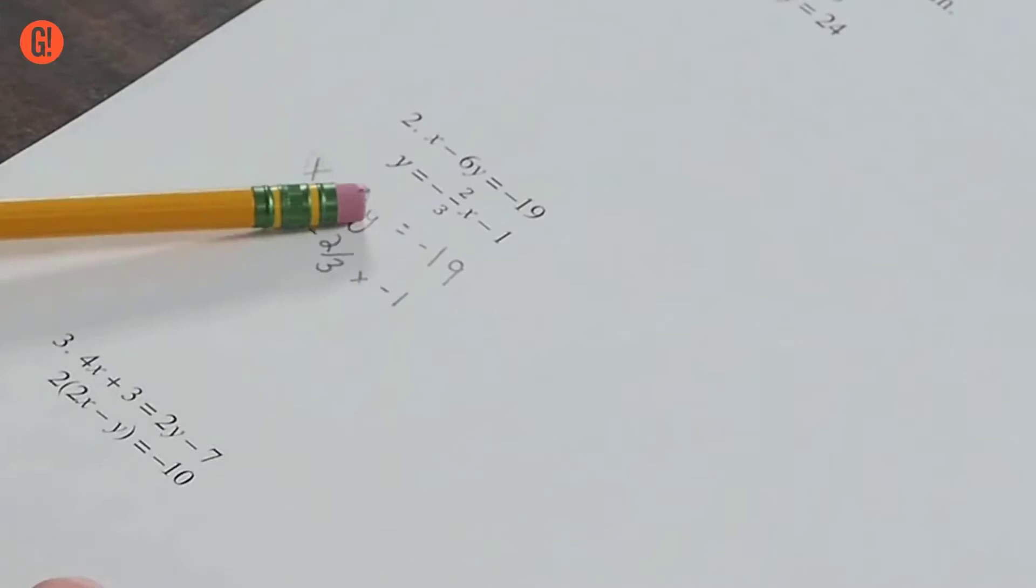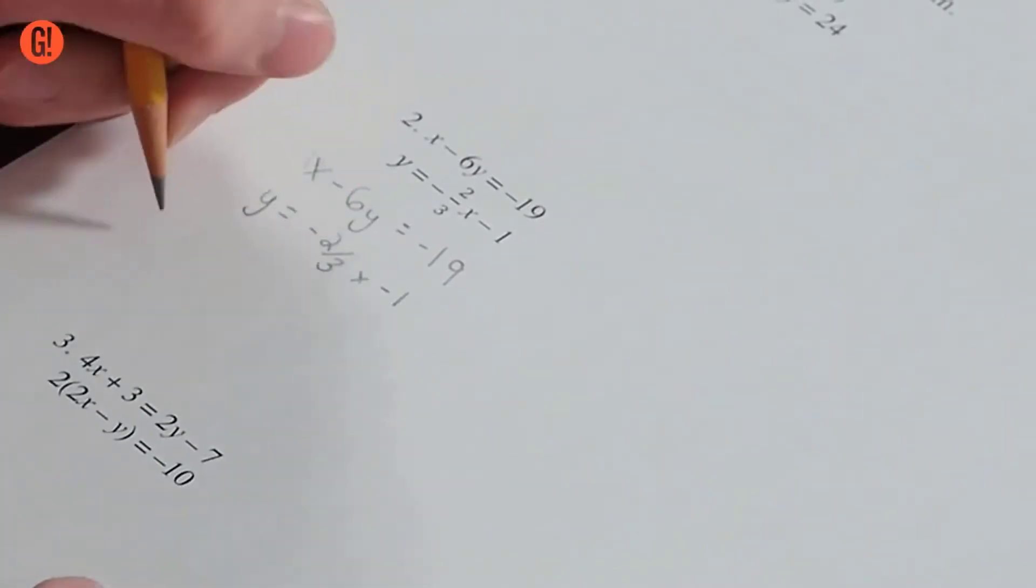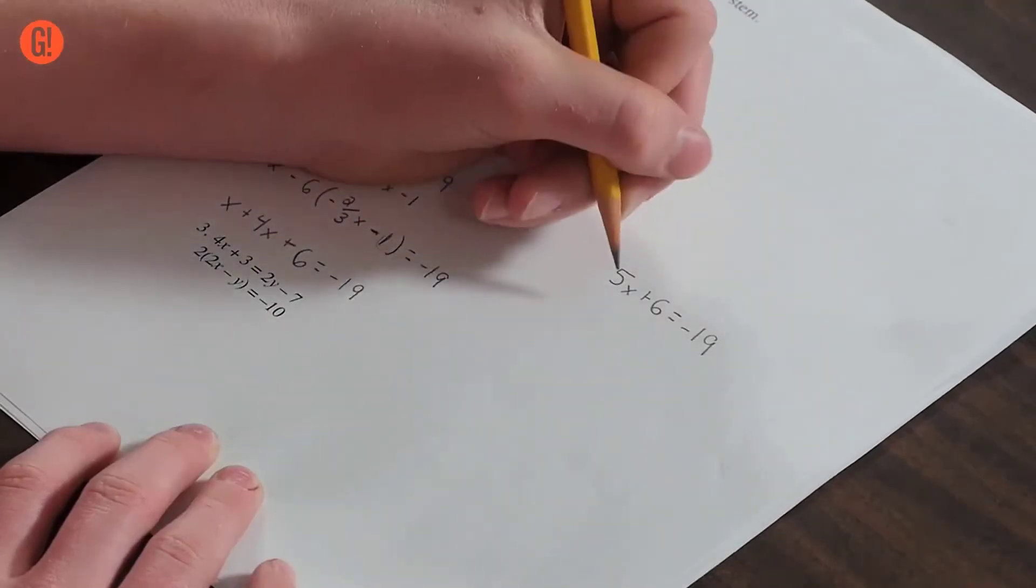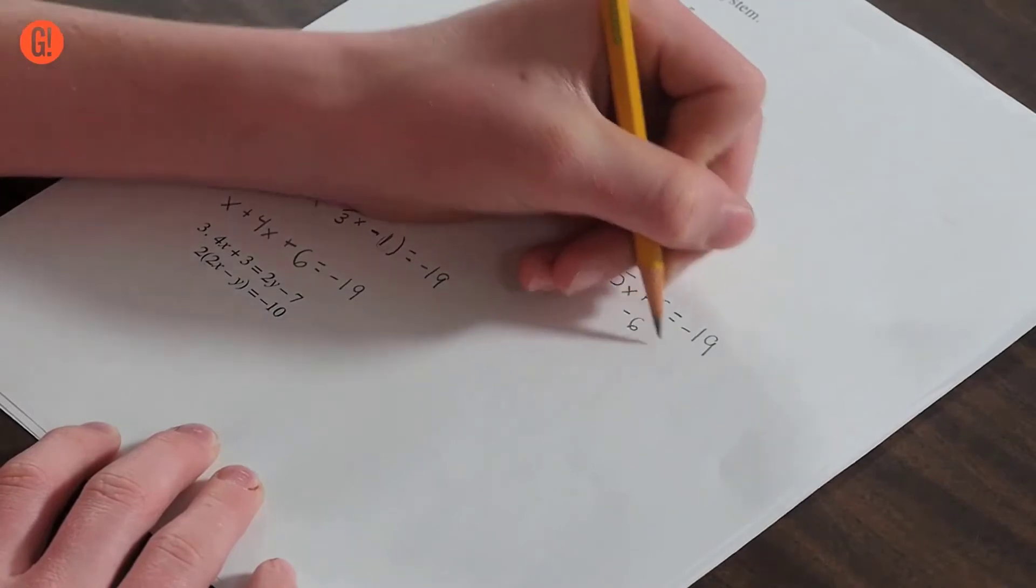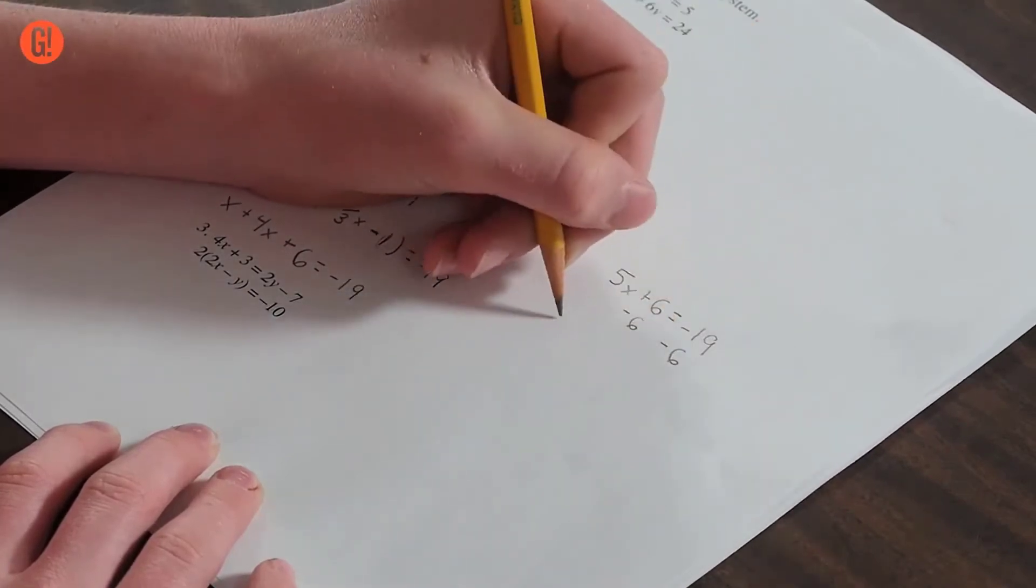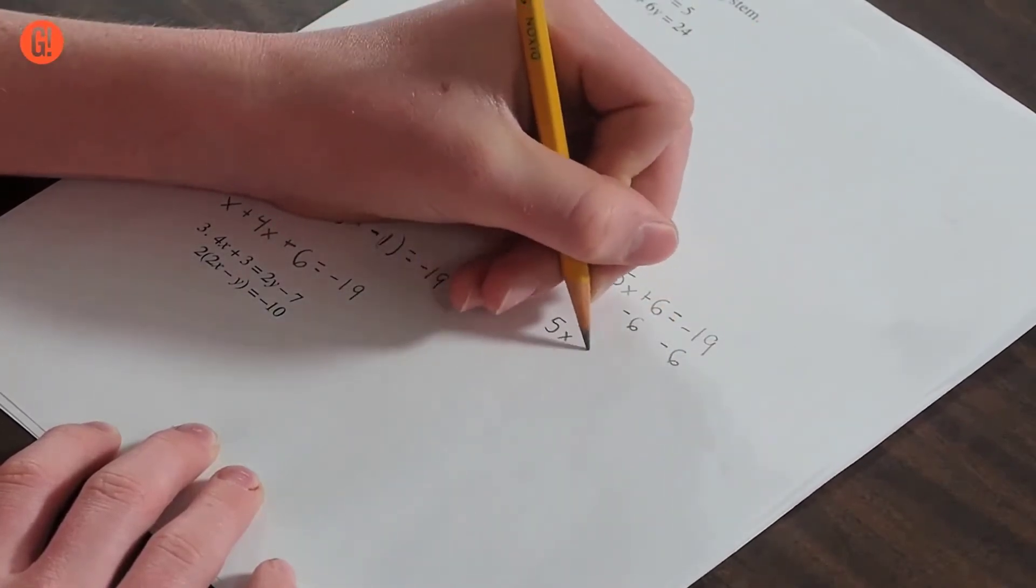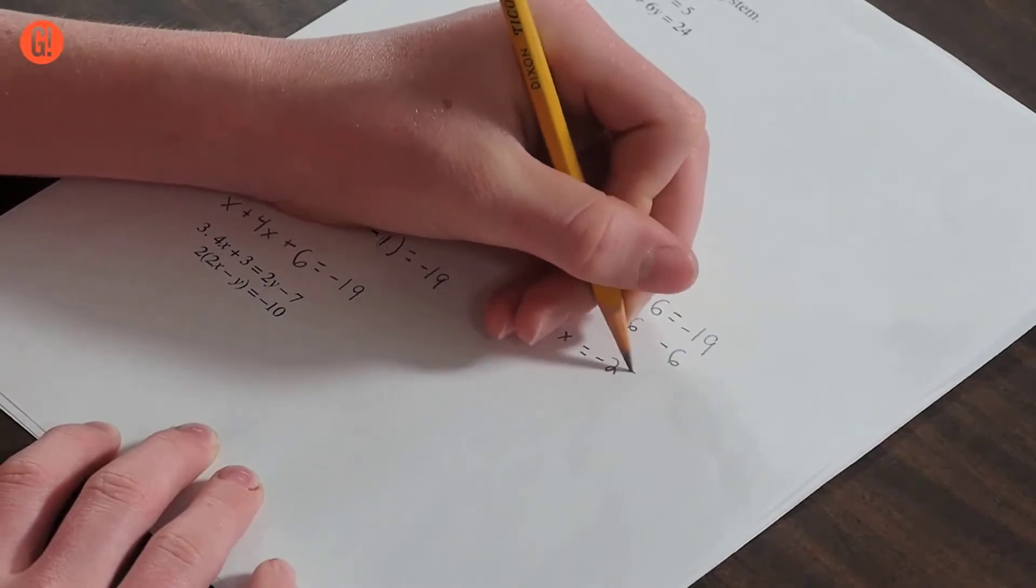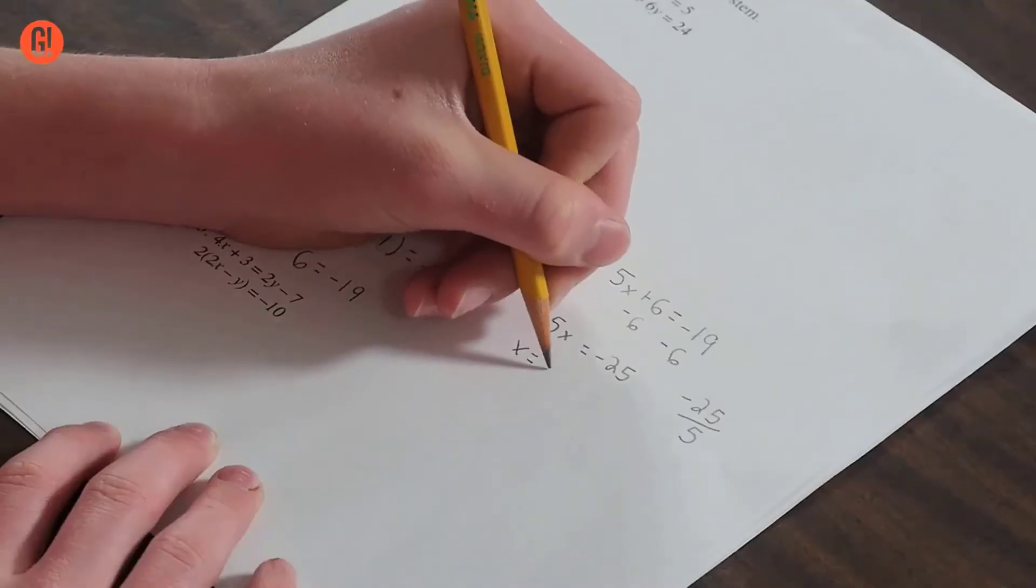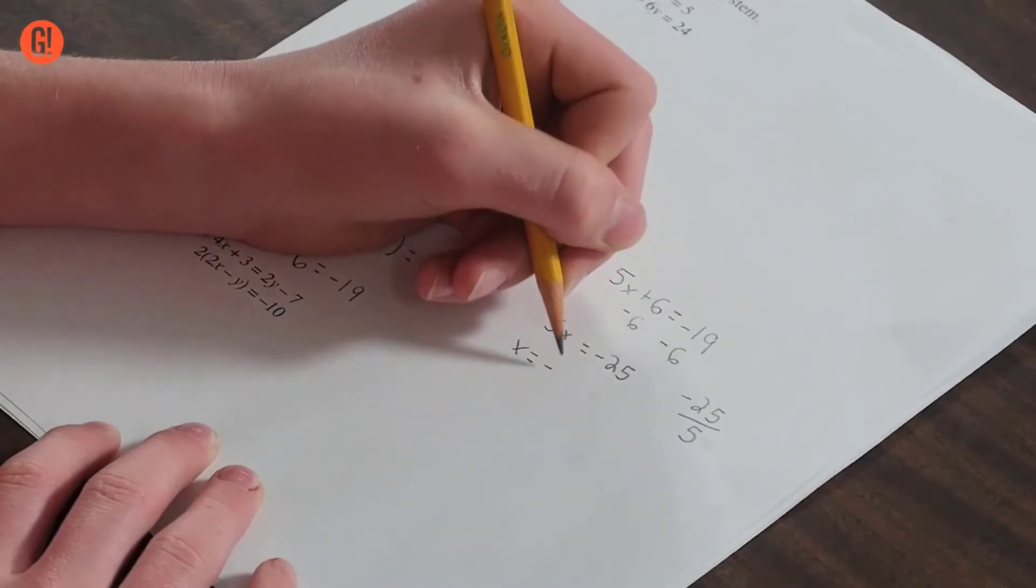I'm going to substitute the y into the 6y. Now that he's got one equation with one variable, he can solve the equation using skills he's been working on for years. I would minus 6 from both sides. 5x equals negative 25, so I would get x equals negative 5.